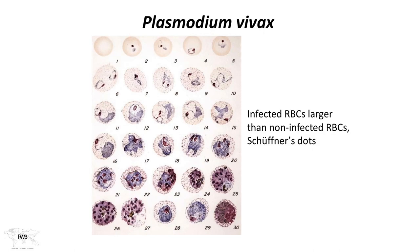For Plasmodium vivax, your microscopist will look for infected red blood cells that are larger. Larger infected cells suggest vivax or ovale. Smaller, older senile red blood cells are associated with malariae. All these morphological features help in deciding what subspecies is present and what treatment is appropriate.